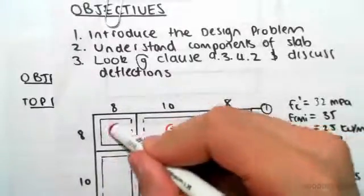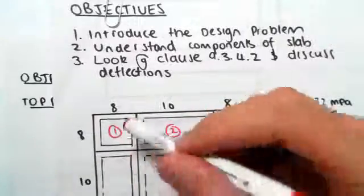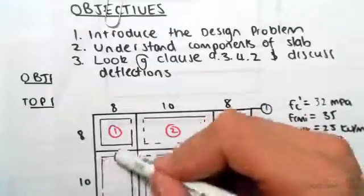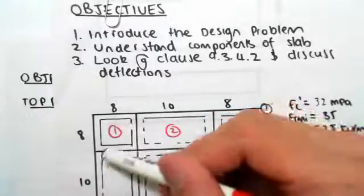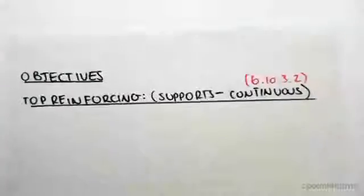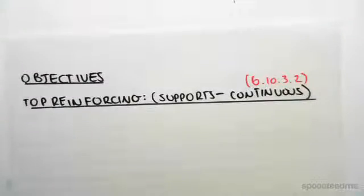Which is in the middle of the slab. Now we're looking at the top of the slab which is in hogging. So middle was in sagging, top reinforcing is hogging now, and we're looking in this video at a continuous edge, so at this edge over here. The formula or what you have to do is found in 6.10.3.2.